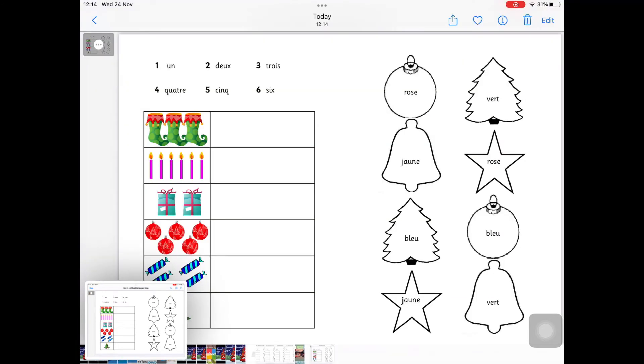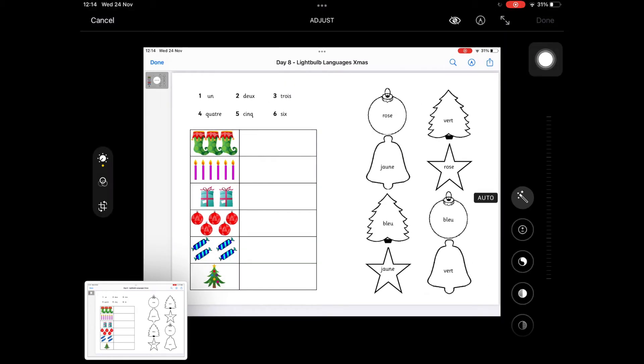Once you've opened your screenshot we're going to use markup to draw on it so you're going to click on edit and then if you click on the little pen tool then you'll get a little pen box for you to use.